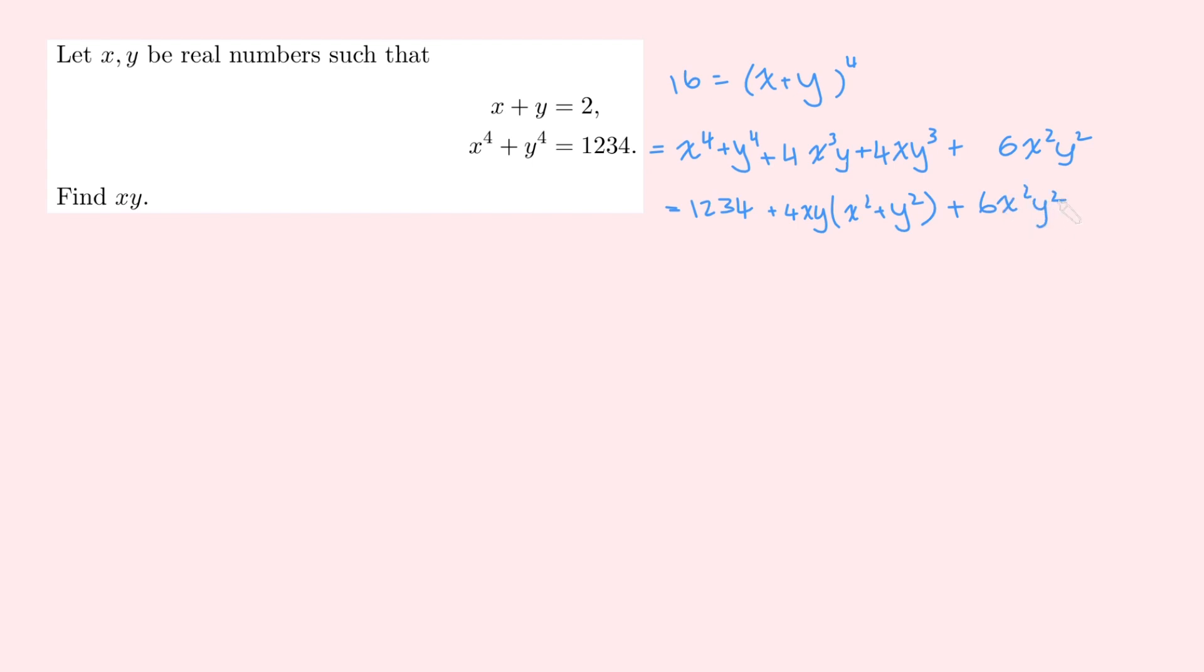Now, it seems like maybe we've hit a bit of a dead end, but this actually looks quite good, because we've got xy here, and also this is just xy squared. So we've just got this x squared plus y squared thing here to deal with. And the trick to dealing with this is we're going to add and subtract the same term. So this is still equal to 1234 plus 4xy.